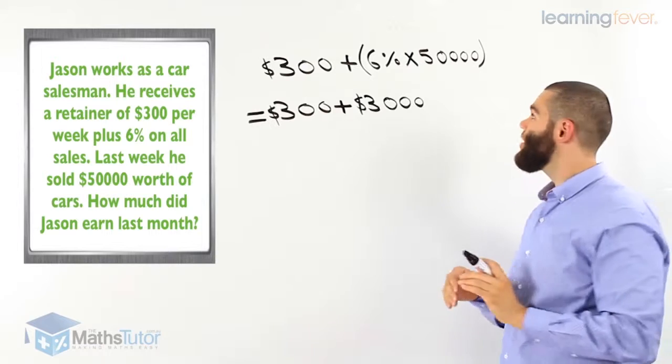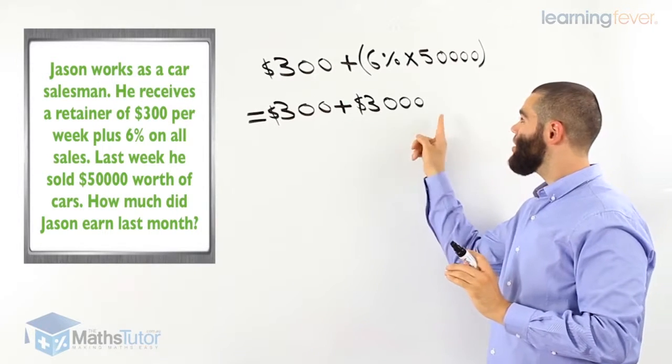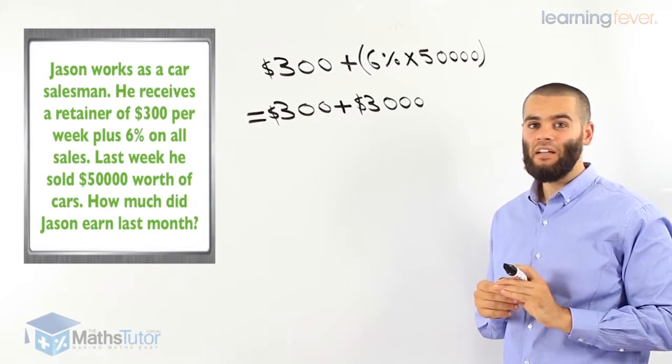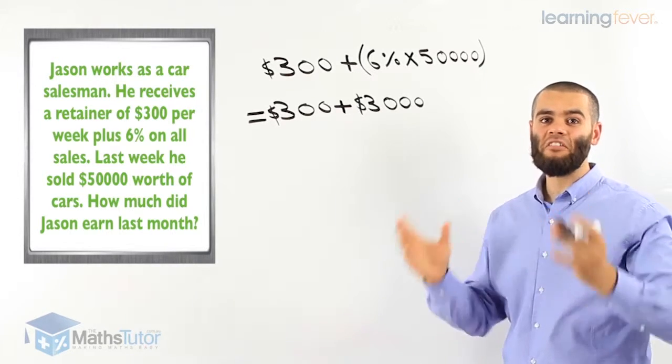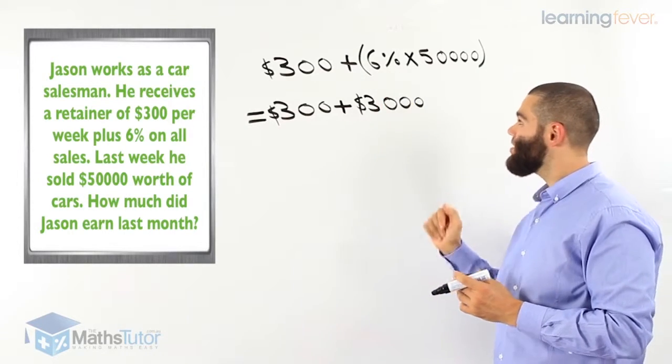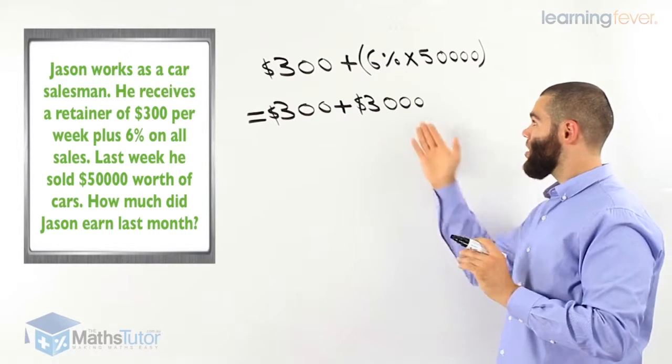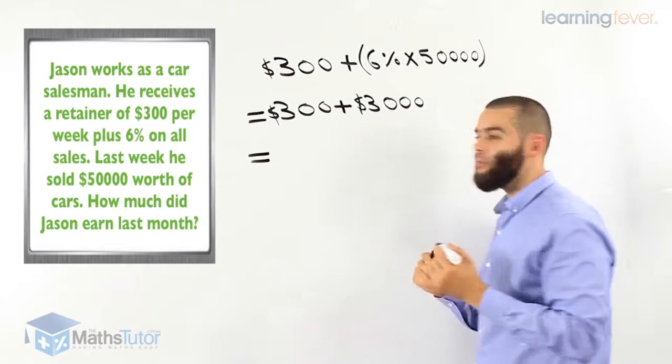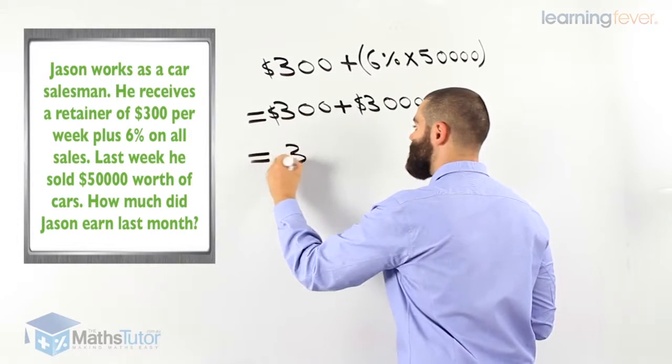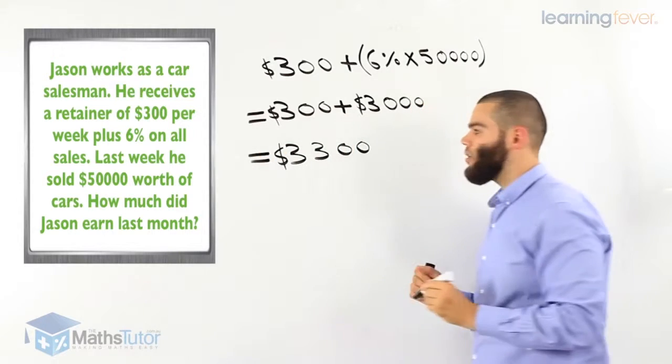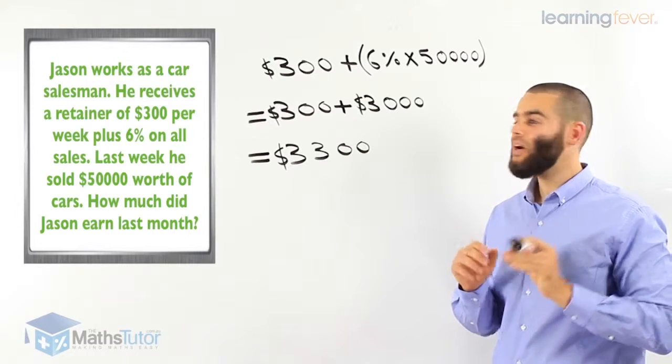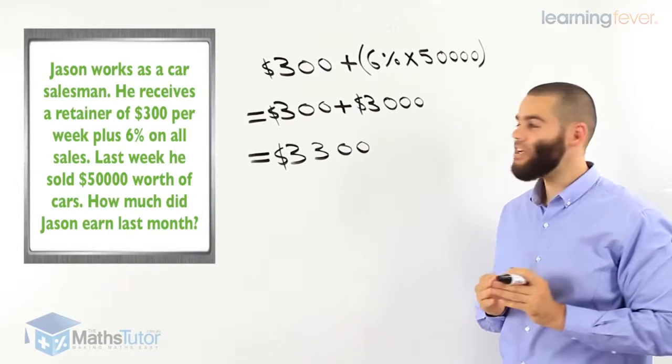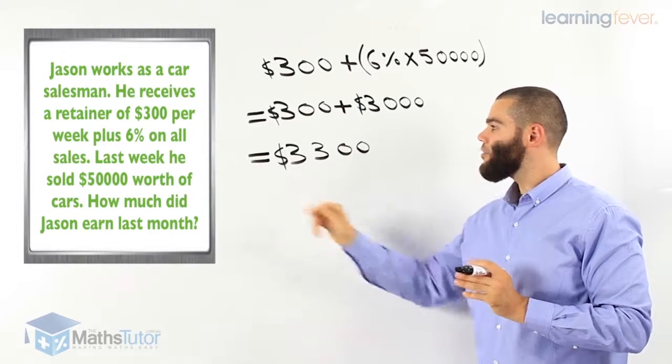So he had a very good week. He sold $50,000 worth of cars. He's earning $3,000 in commission and he's also earning his $300 retainer. So his retainer is his guaranteed wage every week whether he sells or doesn't sell, plus his commission of 6%. He sold $50,000 worth of cars that week. He earned 6% of that which is $3,000. So altogether his retainer, his guaranteed wage is $300 plus the commission $3,000. Altogether that week he earned $3,300 as a payment. That's what he takes home for working hard. He sold $50,000 worth of cars and he also gets his normal guaranteed wage, the retainer of $300. Altogether $3,300.